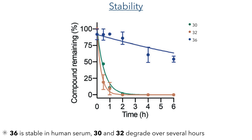This difference in reactivity was also observed in stability studies, where cells were incubated in human serum and compound concentration was determined over time. Compounds 30 and 32 degraded quite quickly, as they are very reactive and likely form covalent bonds with other proteins present in the serum. Compound 36, however, showed degradation at a much slower rate. Taken together, these studies suggest there is a very delicate balance between the desired reactivity with the BoNT-A peptidase and undesired reactivity causing cell death and compound degradation.